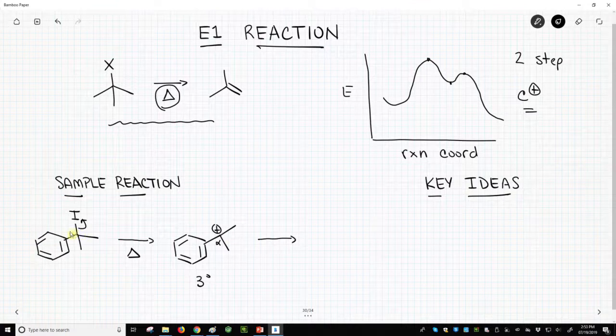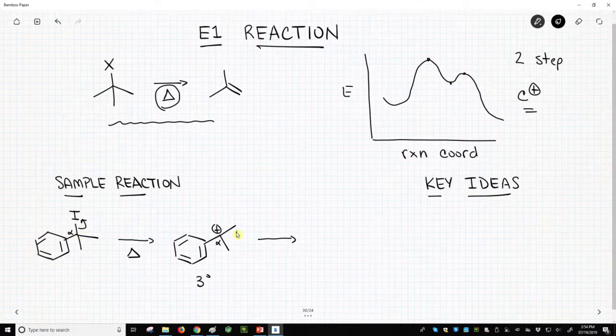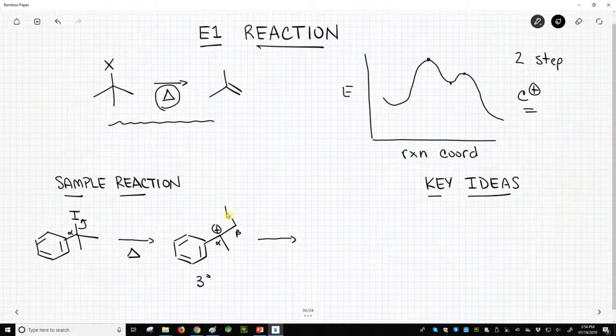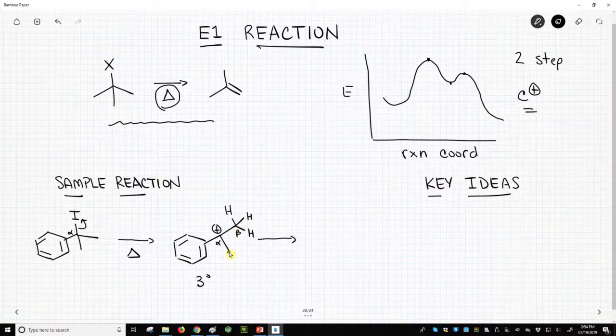The carbocation is the carbon that was attached to the halogen. That's our alpha position. Now we can look next door to that and we will find a host of hydrogens. I've drawn three on that carbon, and three more on that carbon right there. So there are lots of beta-hydrogens.